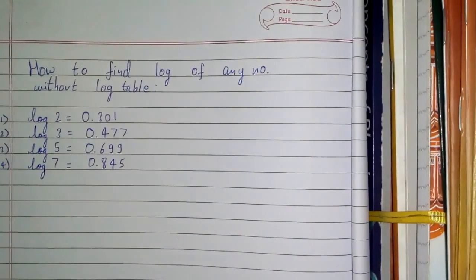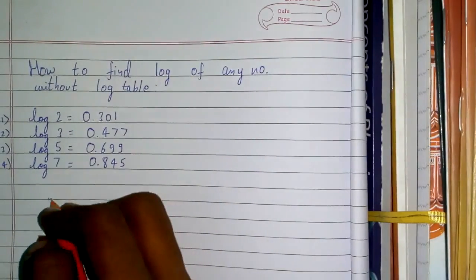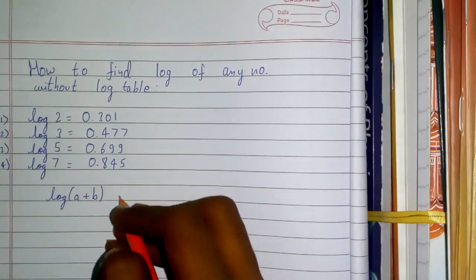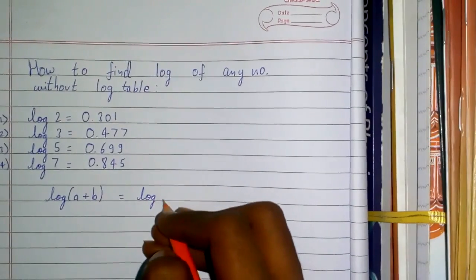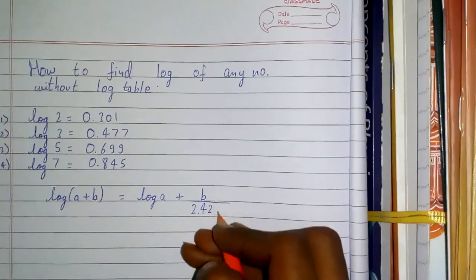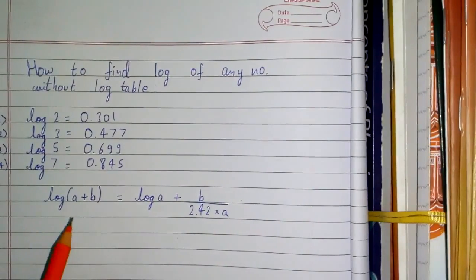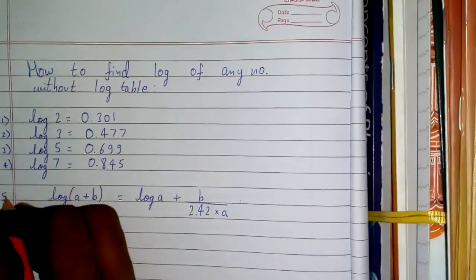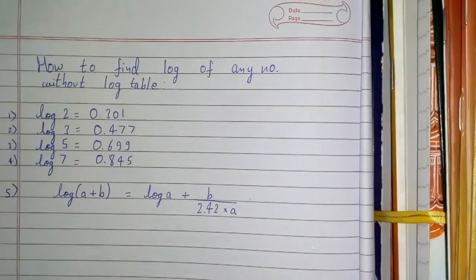Using these values, you can find the log of any number without using a log table. Now you need to remember one formula: log(a+b) = log a + b/(2.42×a). You need to remember these five things, which are very important.